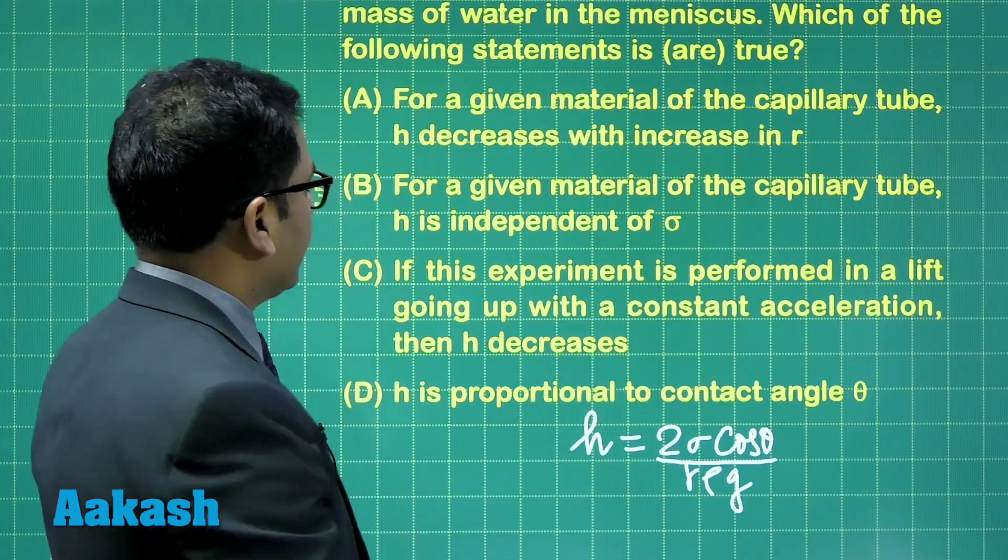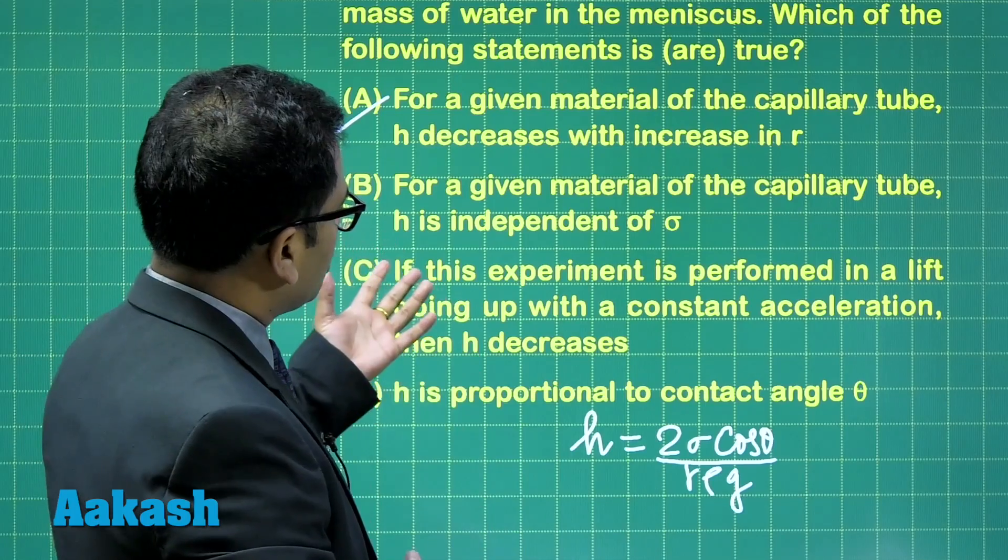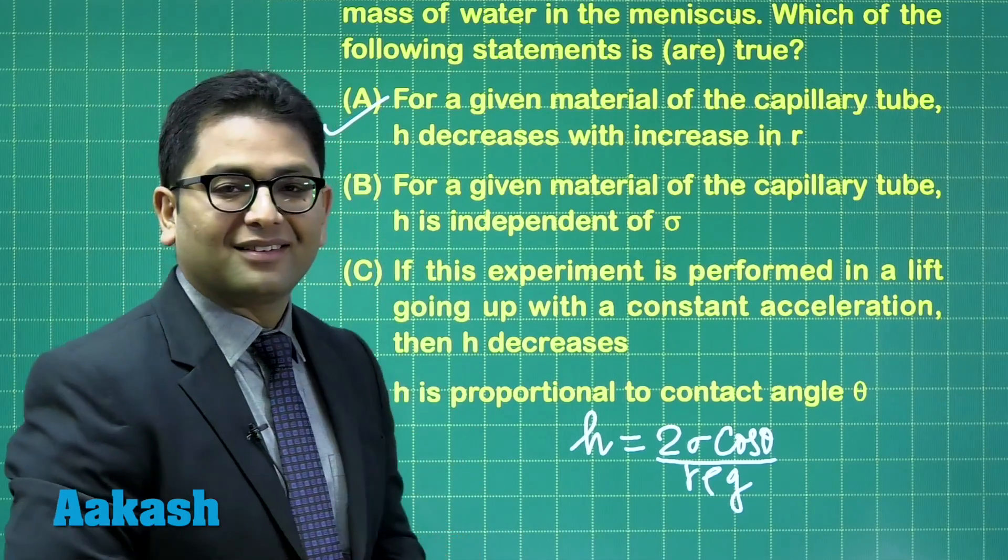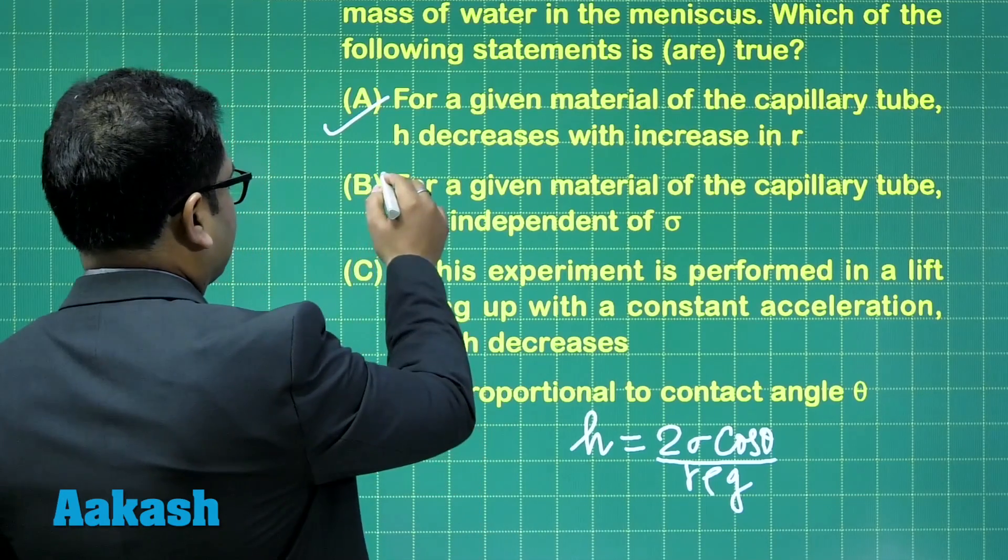For a given material of the capillary tube, h is independent of sigma. That can't happen, because h is depending on sigma. So this is false.